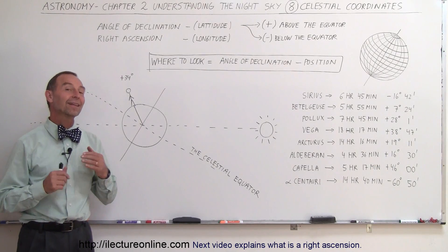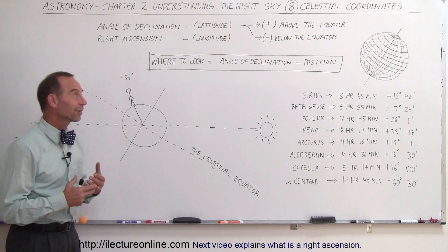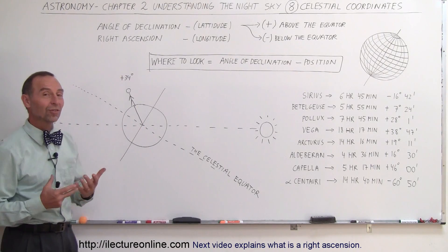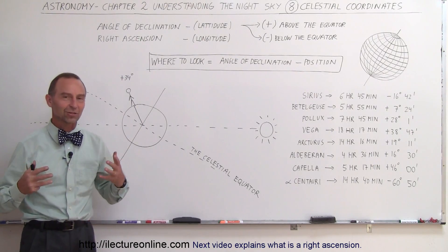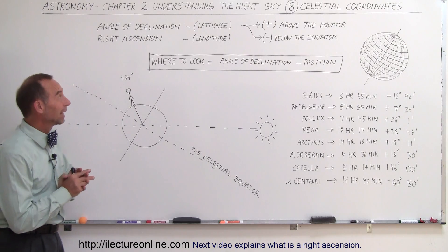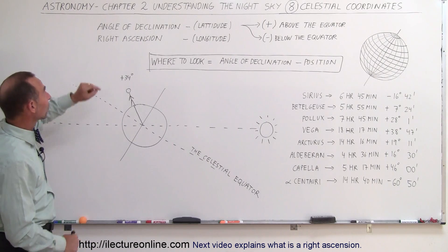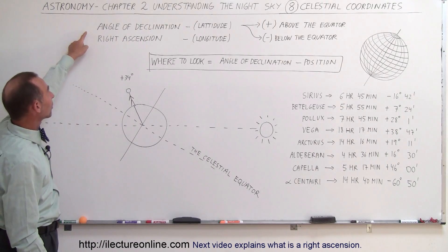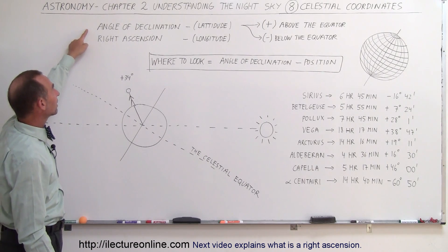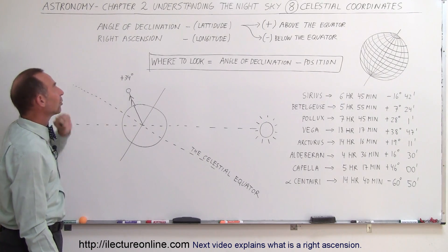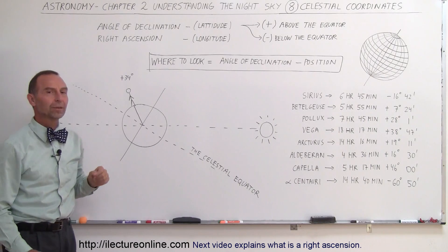Welcome to Electron Online. Let's see if we can figure out the coordinate system of the celestial sphere. The two coordinates that we need to use are what we call the angle of declination and the right ascension.